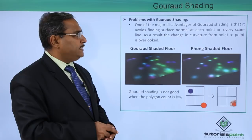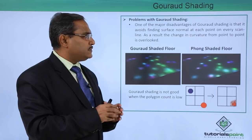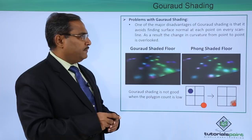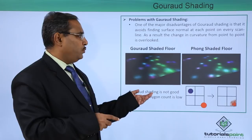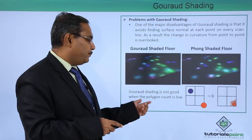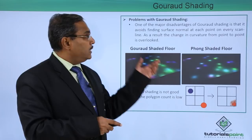One major advantage of Gouraud shading is that it avoids computing the surface normal at each point of every scan line. However, as a result, the change in curvature from point to point remains overlooked. Gouraud shading is not good when the polygon count is low. Here you can see a Gouraud shaded floor compared to the next shading method, and also how Gouraud shading overlooks the respective curvatures available on the surface.